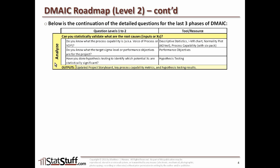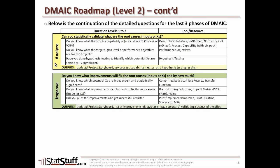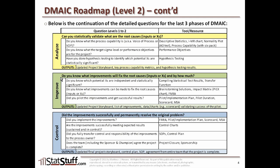Once we can answer yes for the Analyze phase, we move on to the Improve phase, where we ask: do you know what improvements will fix the root causes and by how much? If you're not sure, we work through the sub-layer questions. First: do you know what potential X's are independent and statistically significant? Then: do you know what improvements can be made to fix the root causes or inputs or X's? And finally: did you pilot the improvements and get successful results? The tools to the right can help you answer these questions. Once you can answer yes to these, you can answer yes to the top-layer Improve phase question and are probably ready to move on to the Control phase.